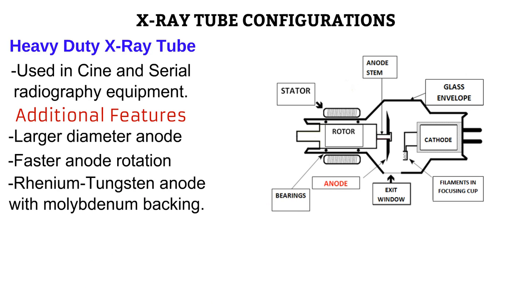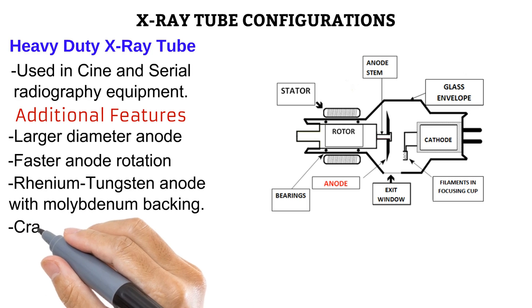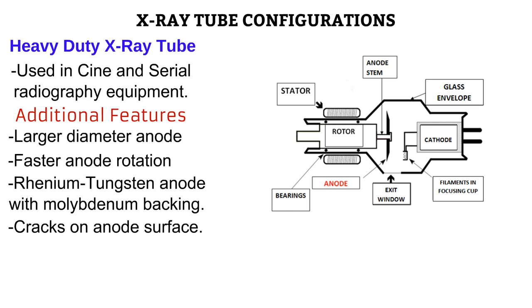Also, instead of just tungsten, as seen in the conventional X-ray tube, the heavy-duty anode is made more compound with an alloy of both tungsten and rhenium. It also has a backing that is made of either molybdenum or graphite. This compound anode gives it a greater thermal capacity, allowing it to store more heat than regular tubes. The anode also has certain cracks on its surface. These cracks are placed on purpose to give room for the anode to expand when hot and contract when cool without getting distorted.